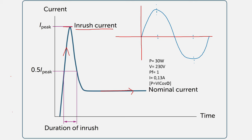The nominal current is the current that the floodlight uses under normal conditions. For example, if we install a 30-watt LED floodlight and assume the power factor is 1, the running current would be 130 milliamps or 0.13 amps. So under normal conditions, a 30-watt floodlight operating at 230 volts would only use 0.13 amps — that would be the nominal current.